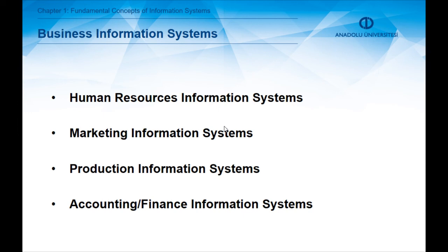These information systems will be explained from the fourth chapter to the seventh chapter. The reason business information systems are classified into these categories is that businesses generally have four fundamental departments: human resources, marketing, production, and accounting and finance. Information systems are designed corresponding to these fundamental business departments.